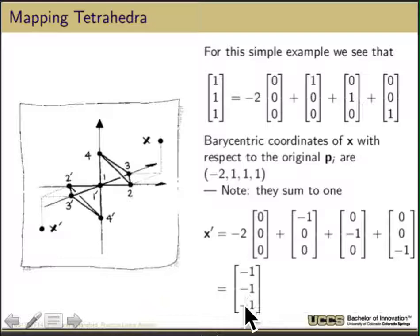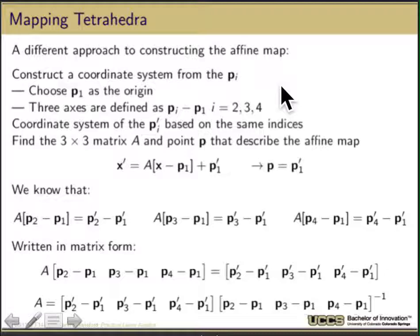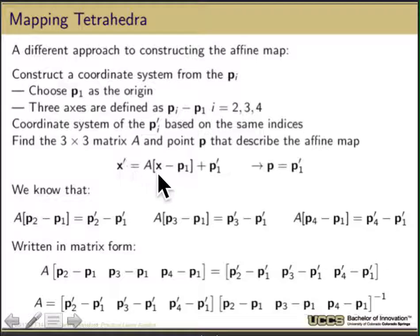It's not always so trivial — in this case it was trivial because our basis vectors were so nice. Another way of doing this is a little bit like we do with triangles, with a slightly different approach. If we assume we have a general point P1 as the origin, I can subtract it from each of the other three points and get three vectors. We want to find a 3x3 matrix A and the point P that describes the affine map: x' = A*(x - P1) + P1', so that maps the tetrahedron.